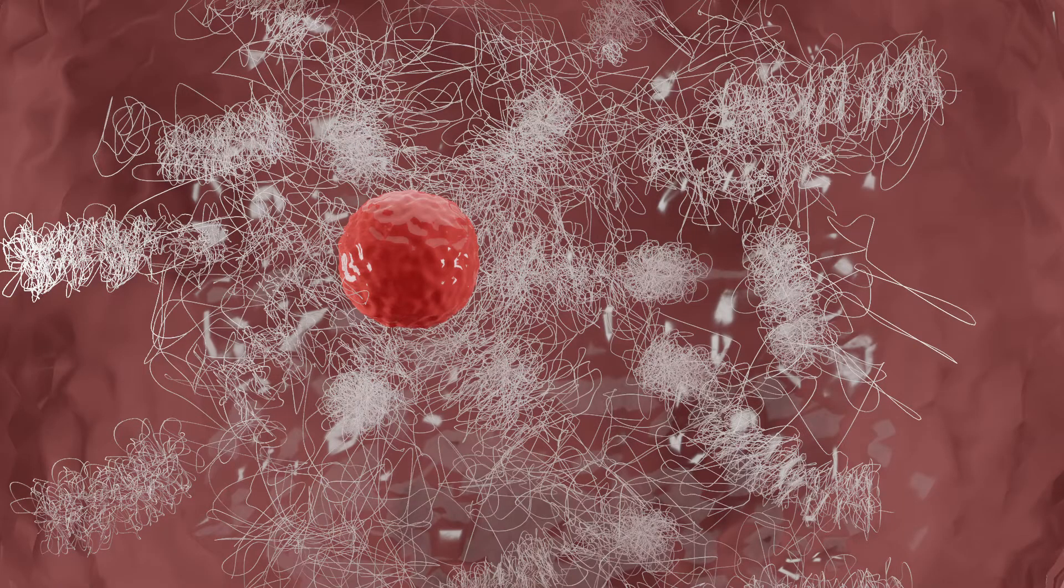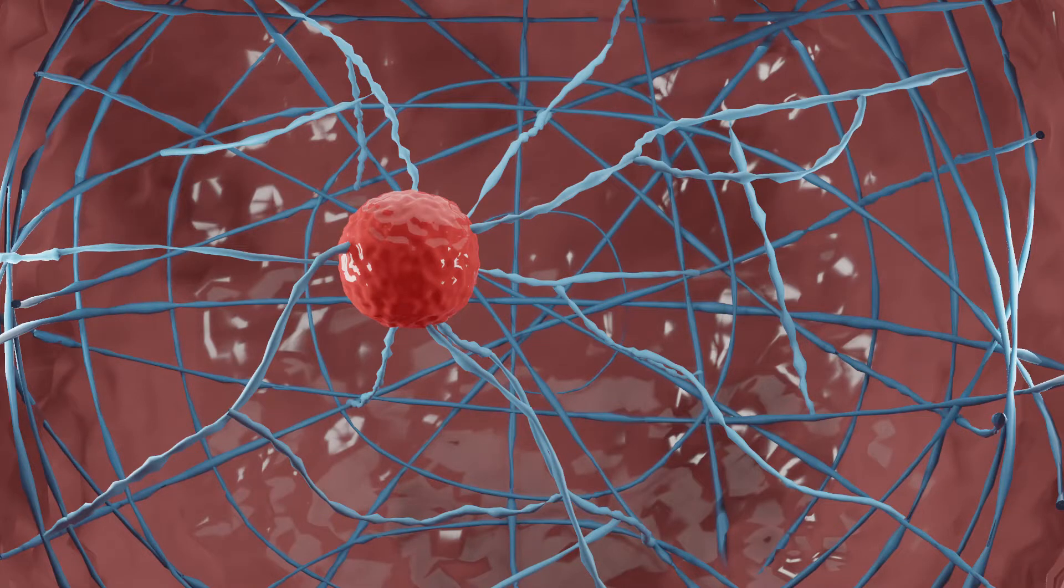But what keeps each structure in its own spot within the nucleus, instead of floating between one another? Within the nucleus, there is a network of proteins forming a scaffold, a structural framework to which the DNA can hold onto. This is called the nuclear matrix.